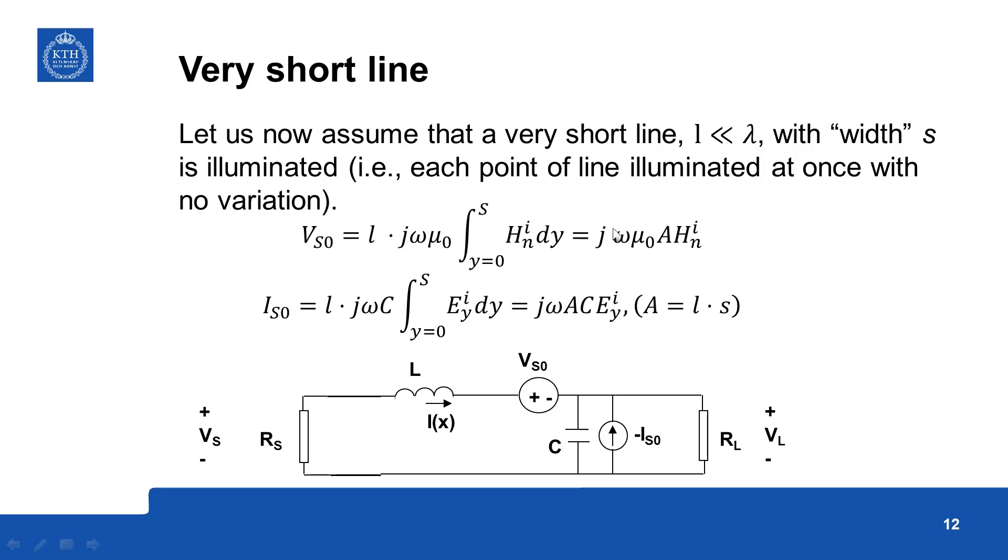So voltage source is given by J omega mu 0 area times H N, so this will give the mu 0 A H N will be giving you the complete flux and J omega and this flux phi will give you rate of change of flux in time domain.